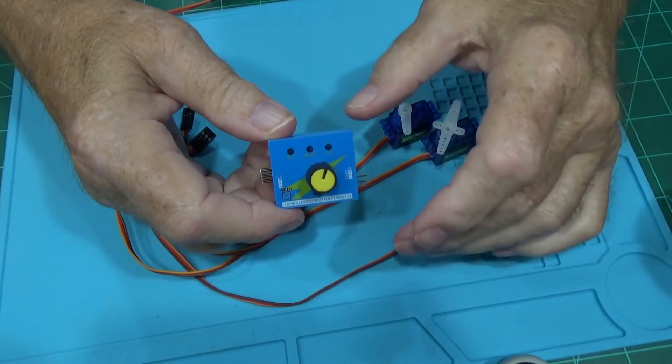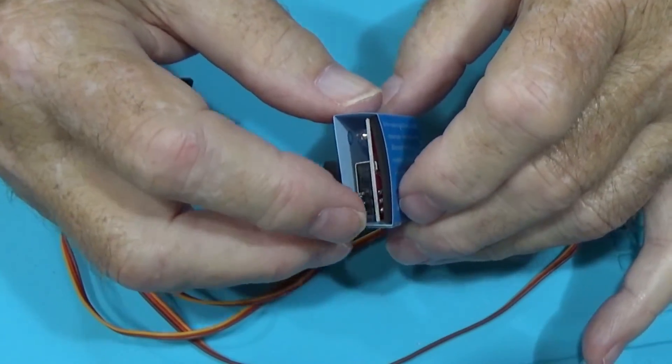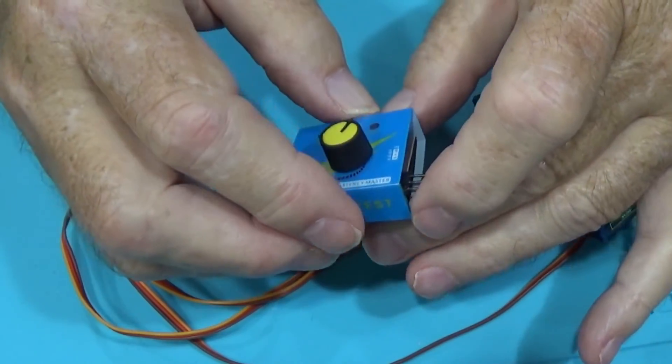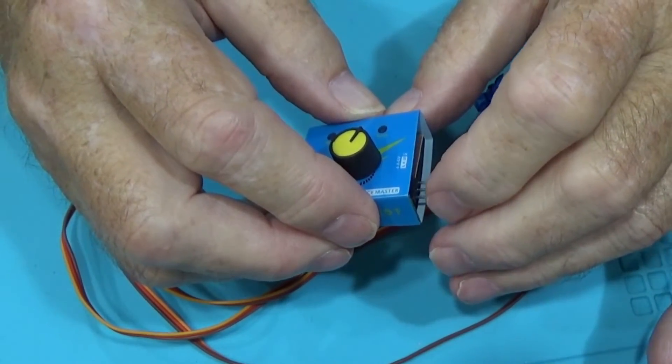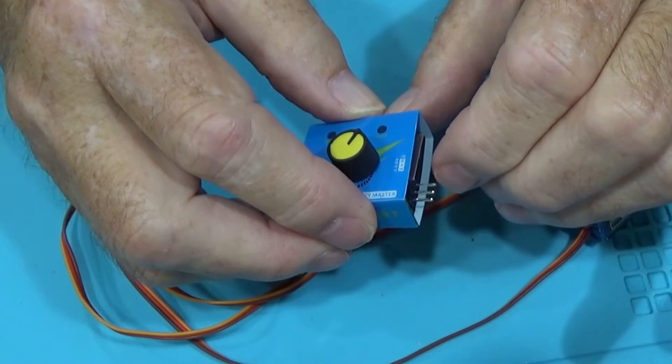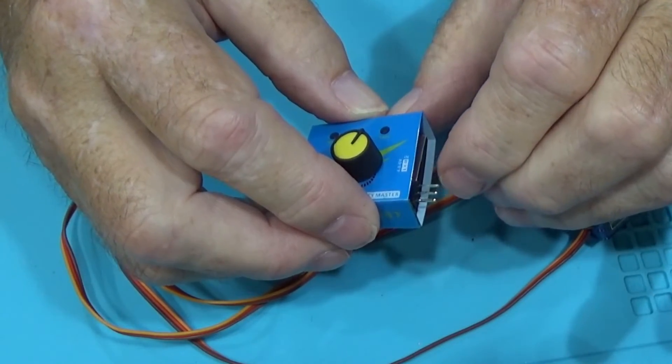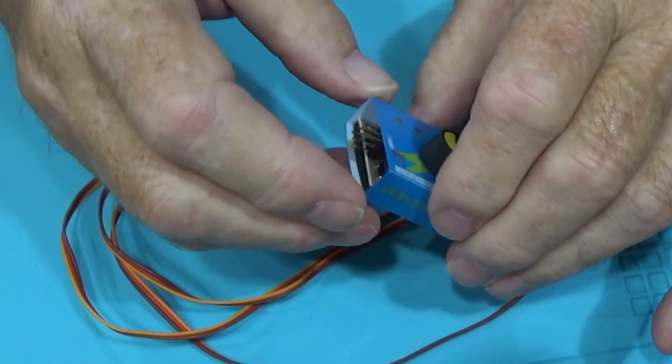Here's a close-up of the servo tester. I'll turn it around. You can see on this side, this is where you apply the power. You can apply, there's a positive and negative, and I guess this one's signal. I guess you could put your own signal in there. I haven't seen any documentation on this of how to use that pin right there.